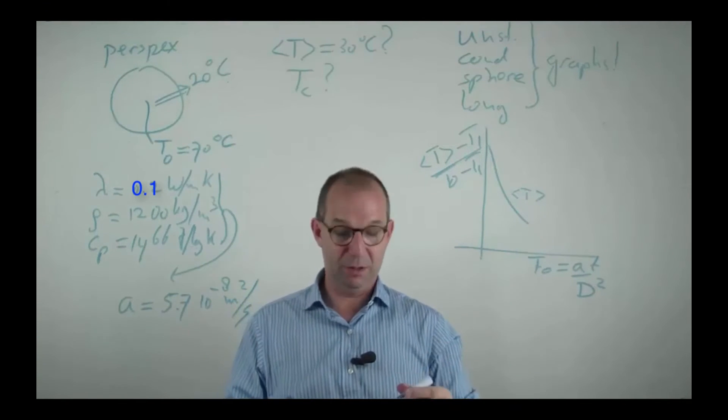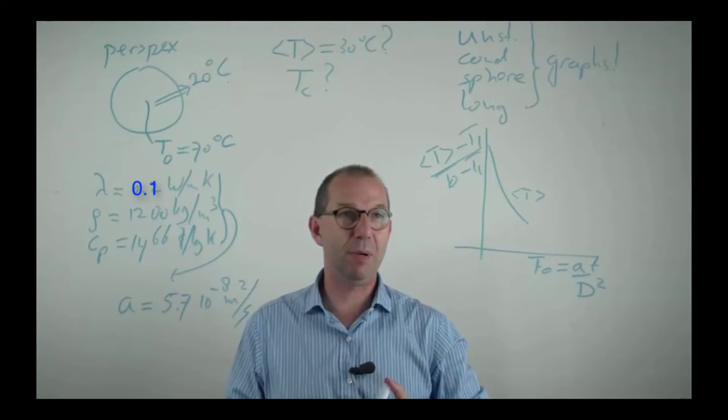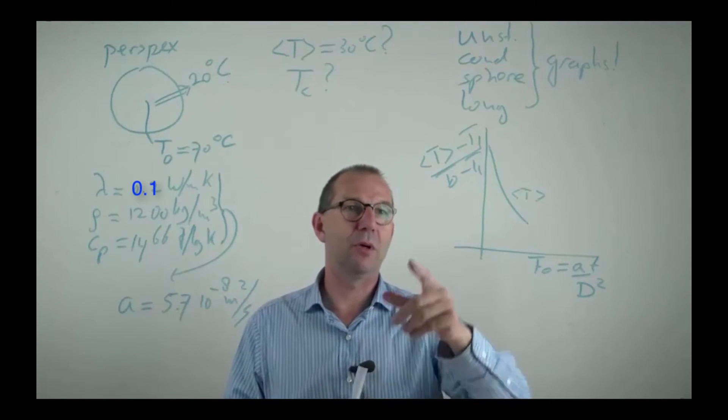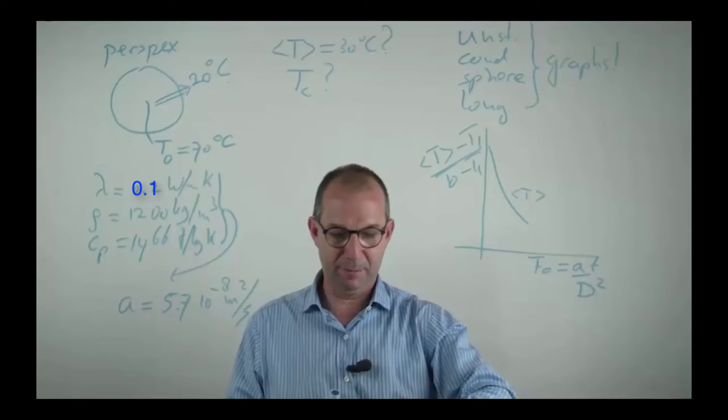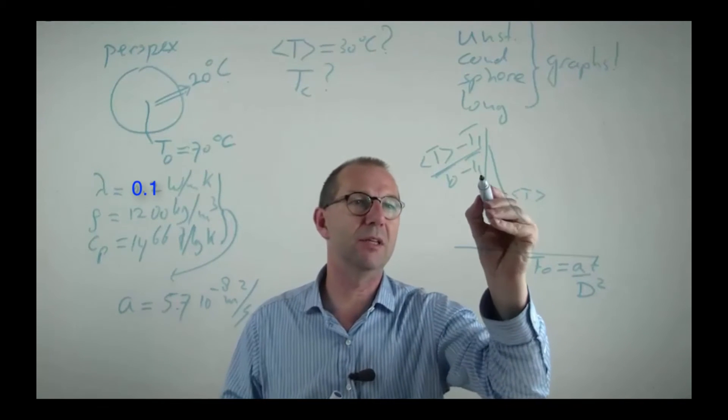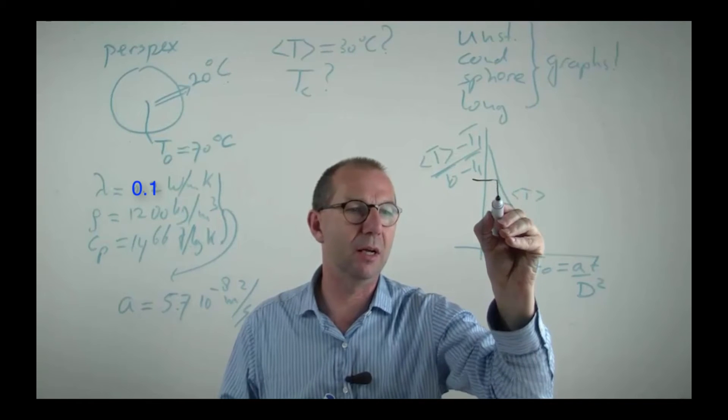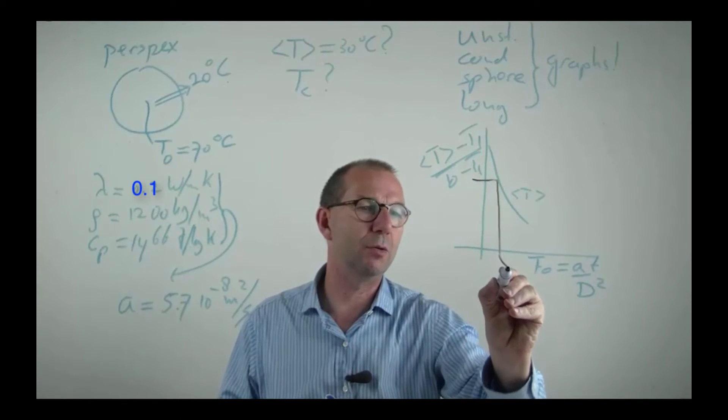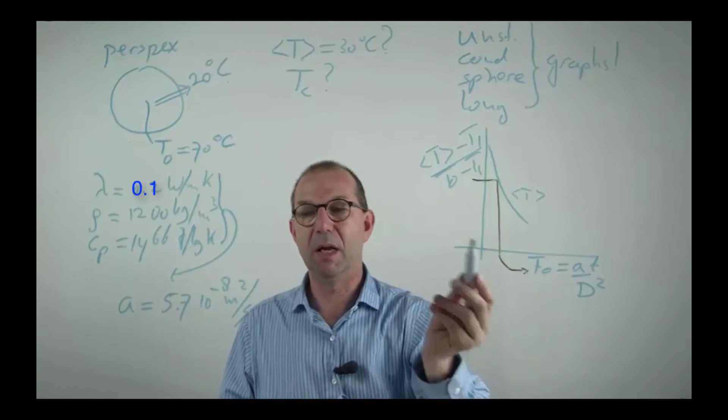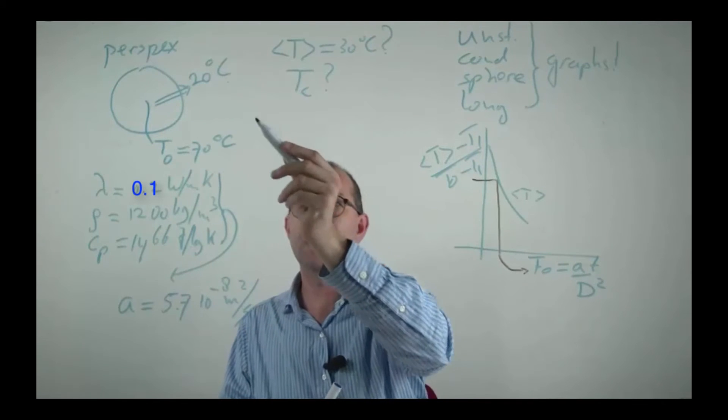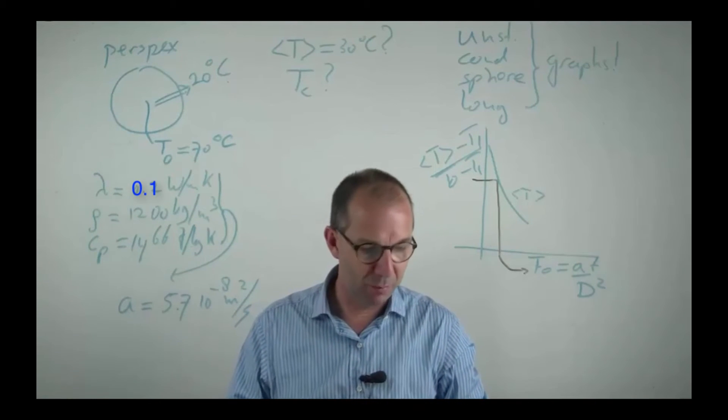Now we have all the ingredients. All we need to do is pick up the graph, calculate this number, read off the line. So what we're going to do, calculate this number, read off the line, find the corresponding Fourier number and back out with A and the diameter the time required.